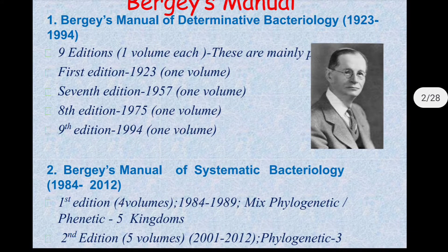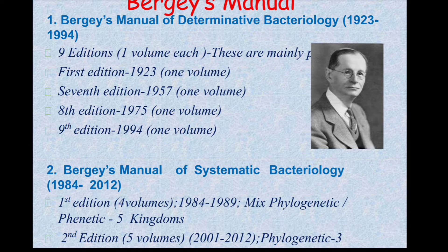Bergey's Manual of Determinative Bacteriology consists of nine editions, one volume each. The first edition was published in 1923, the seventh edition in 1957, the eighth edition in 1975, and the ninth edition in 1994 — each with one volume.